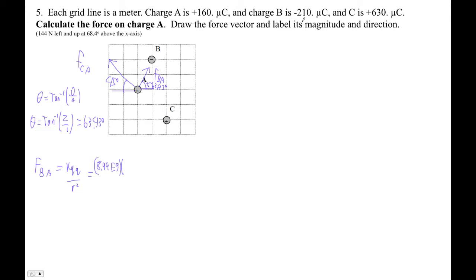And then let's see, B is 210. I'm going to ignore the minus sign because I've already figured out the direction that the force is going to be. So 210 E minus 6. And then A is 160. And then that is divided by the distance to B. We're going from A to B, it's square root of 1 squared plus 2 squared.